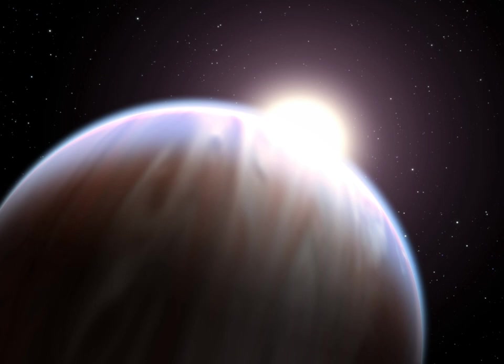The planet may have migrated inward smoothly via type 2 orbital migration. Or it may have migrated more suddenly due to gravitational scattering onto eccentric orbits during an encounter with another massive planet, followed by the circularization and shrinking of the orbits due to tidal interactions with the star.